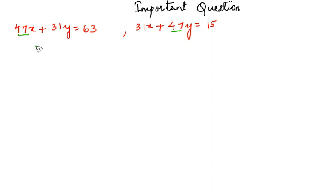We'll first add these two equations. We get 78x plus 78y equals 78. Taking 78 common on both sides, x plus y equals 1. This is our first equation. Now subtracting these two equations, we get...